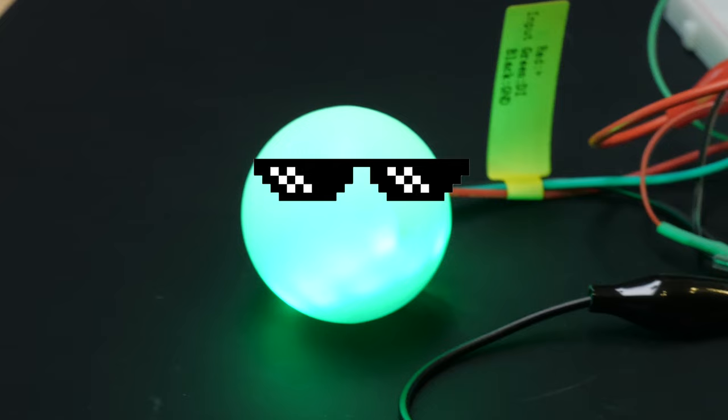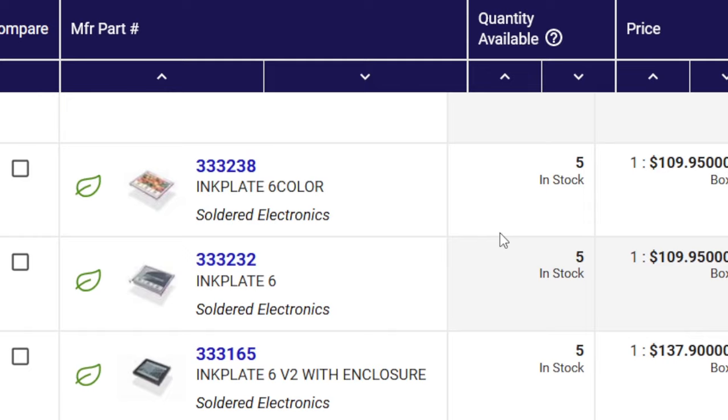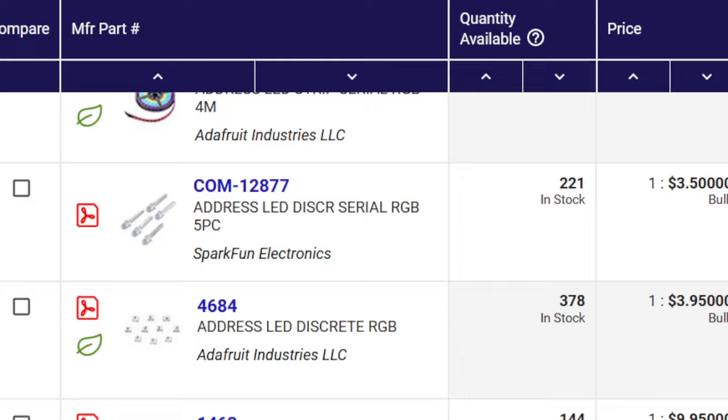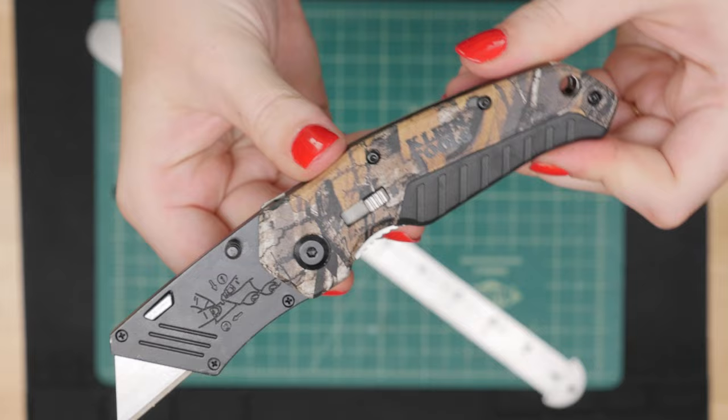You can get all the supplies for your CheerLights project at Digikey, the sponsor for this video. Not only do they carry just about every WiFi board and addressable LED product out there, but also the connectors, soldering tools and supplies, and last-minute gifts because they ship super fast. Check out my favorite things video over on the Digikey channel to hear my best gift suggestions.